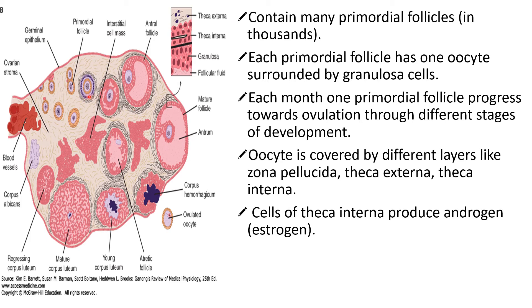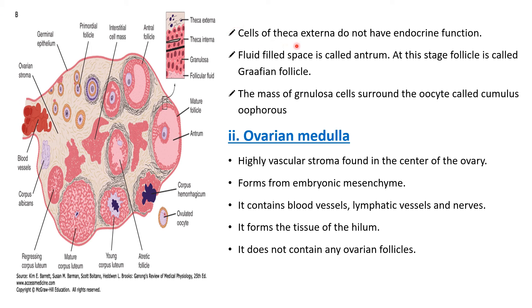The oocyte is surrounded by different layers: zona pellucida, theca externa, and theca interna. The outermost layer is theca externa; below that is theca interna; below that is granulosa; and below that follicular fluid is present. Cells of theca interna produce androgen, that is the sex hormone estrogen. Cells of theca externa do not have endocrine function — only theca interna performs the endocrine function and secretes the female steroid hormone, estrogen.